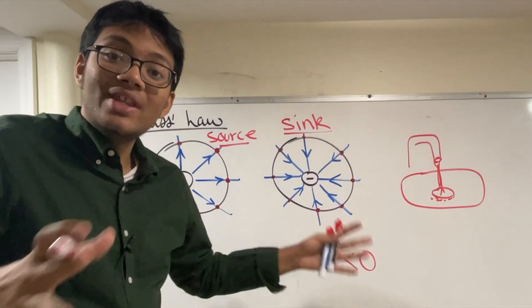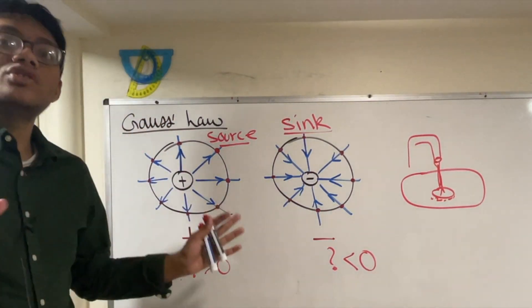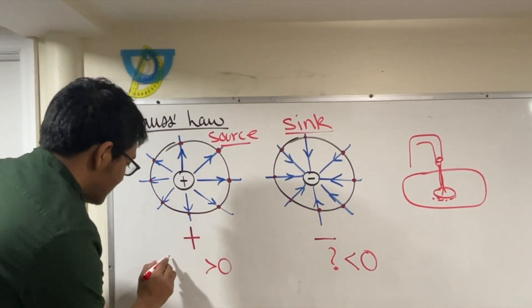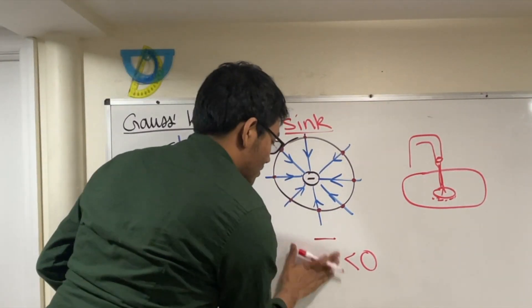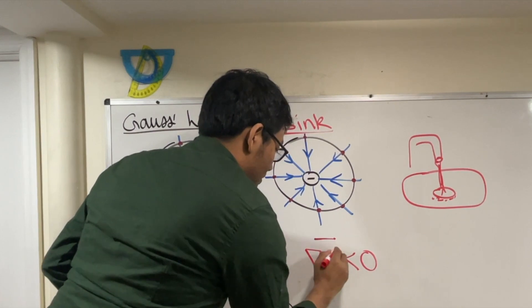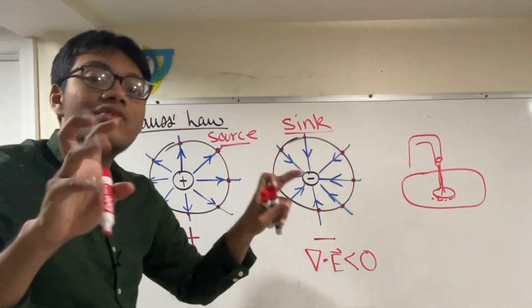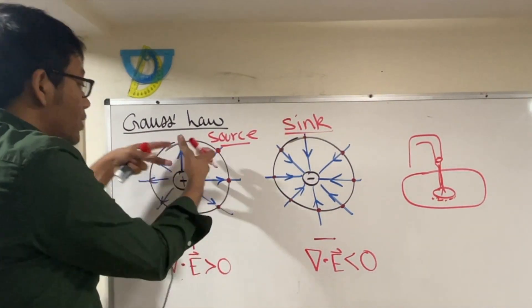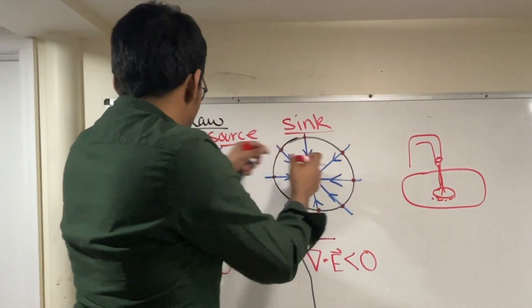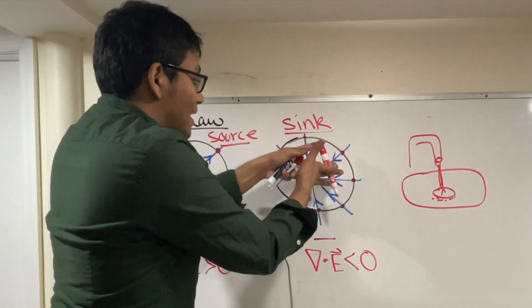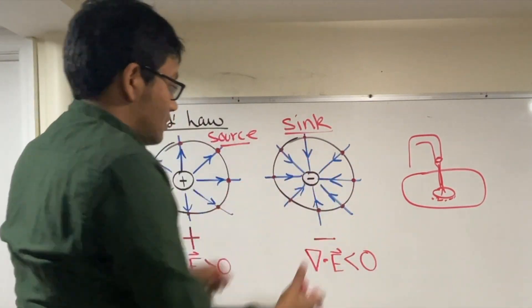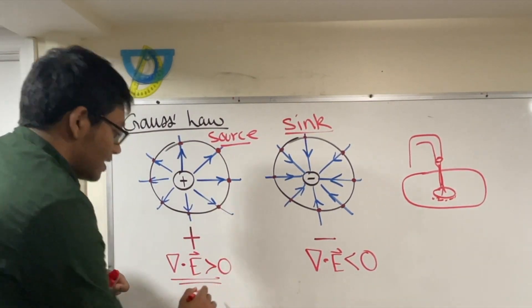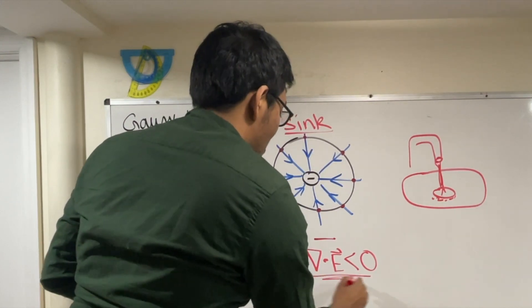What is this thing? The thing is the divergence of the electric field. That's what's positive here and negative here. This whole thing is called the divergence of the electric field. All it's saying is: how much is the electric field going out or coming in? Here, all of the electric field lines are going out — so you have a positive divergence. Here, all the electric field lines are coming in — so you have a negative divergence.